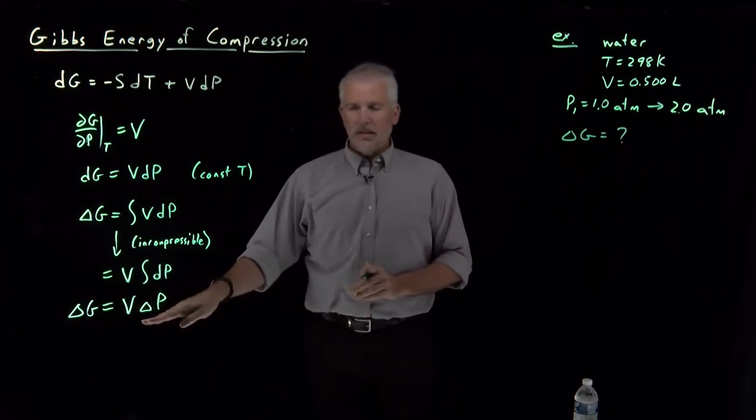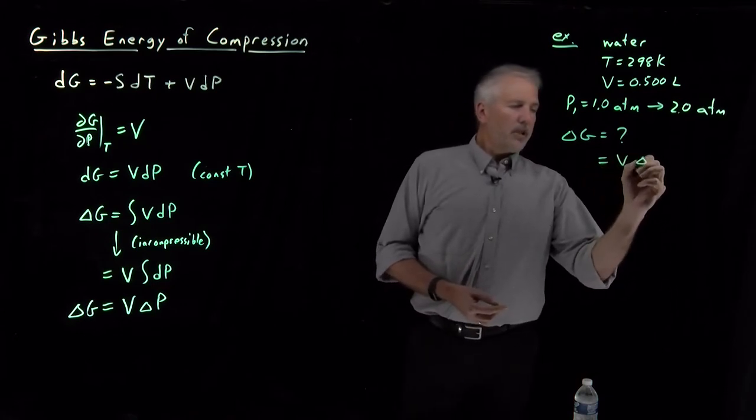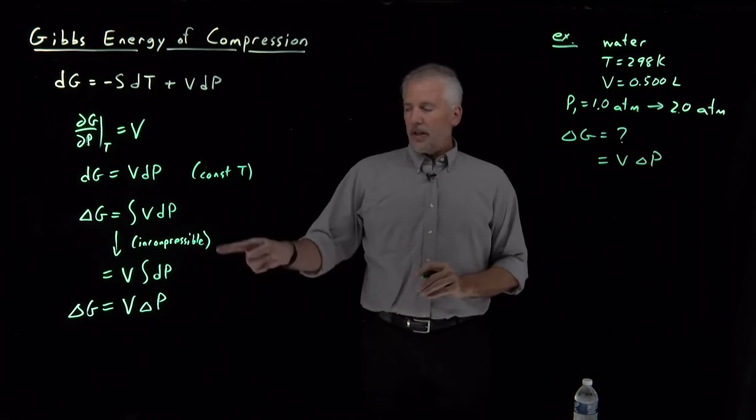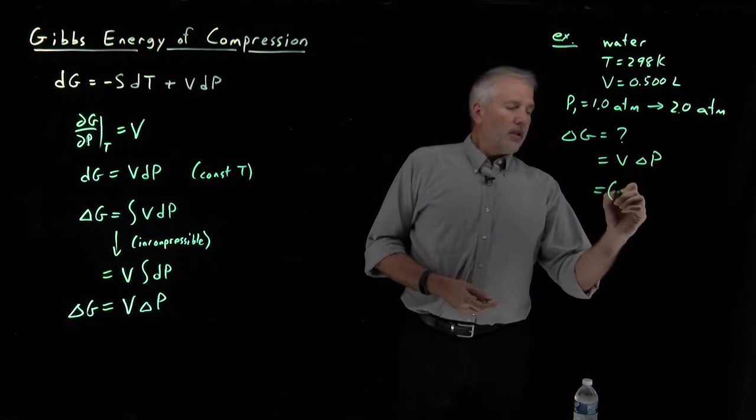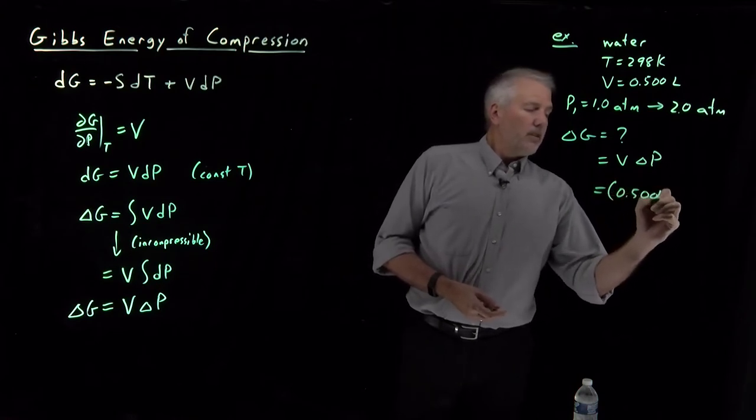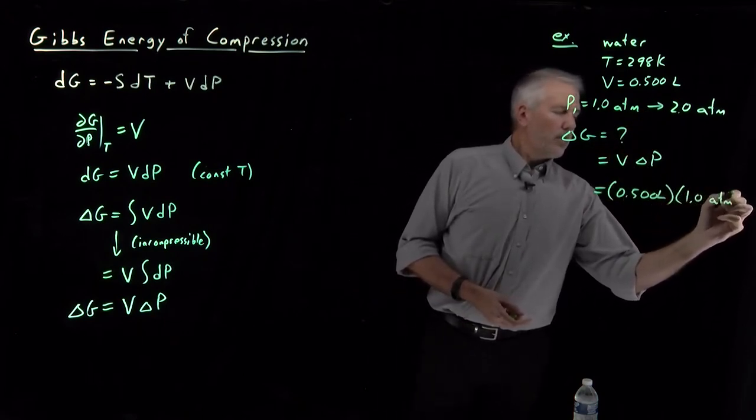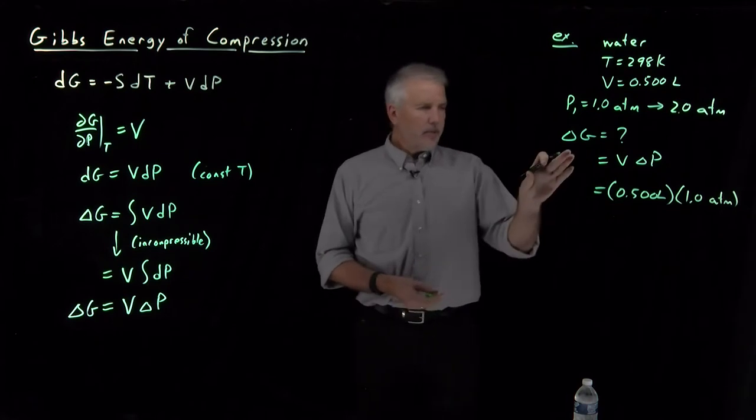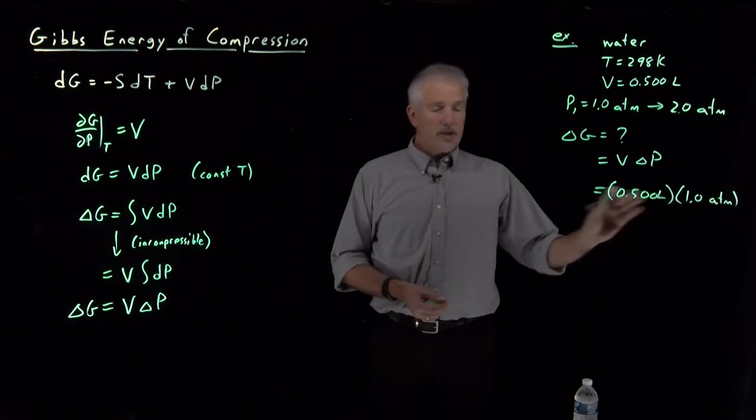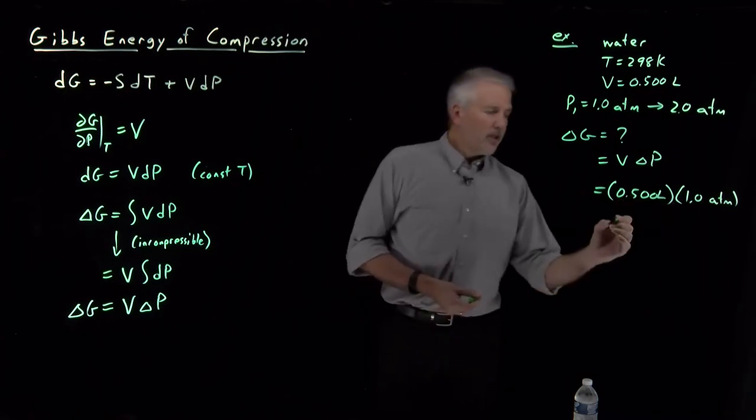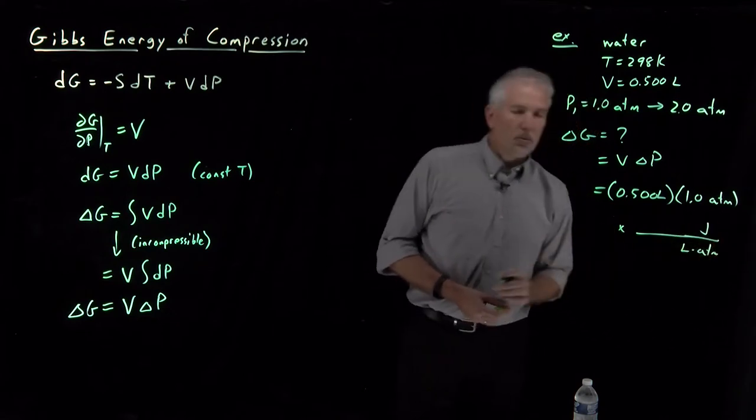Well, we have an expression that can answer that question quite simply. It's just volume times the change in pressure, if I can assume the water is incompressible. So that's going to be half a liter multiplied by the change in pressure from one atmosphere to two atmospheres. So that's one atmosphere. That will give me the Gibbs free energy change in liters times atmospheres, which is a unit of energy, but it's not the most convenient unit of energy. To convert that to a more convenient unit of energy, I need to convert liter atmospheres to joules.